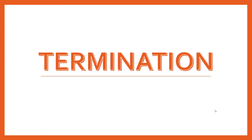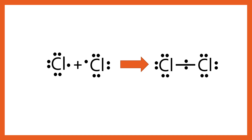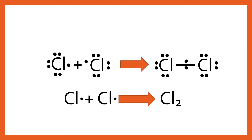That brings us to termination — putting a stop to the reaction by soaking up radical species and forming stable products. There are various ways this can happen. The simplest termination step is to take the initiation equation and reverse it: two Cl• radicals react together to reform Cl₂, which is a stable product. So you're essentially reversing the initiation step. We can also represent that more simply with that equation.